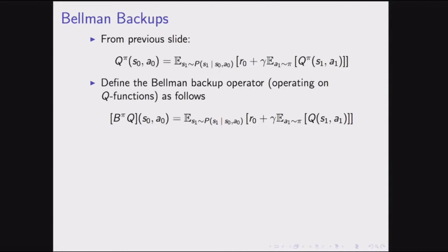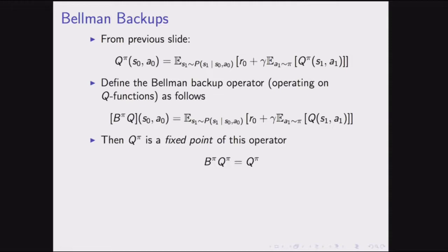Q^pi is a fixed point of this Bellman backup operator — applying it gives back the same thing. And if we repeatedly apply this backup operator to any arbitrary initial Q function, the series will converge to Q^pi. This is provable using the Banach fixed point theorem. So you can use an iterative algorithm to estimate Q^pi by starting from any Q function and repeatedly applying the backup operator.